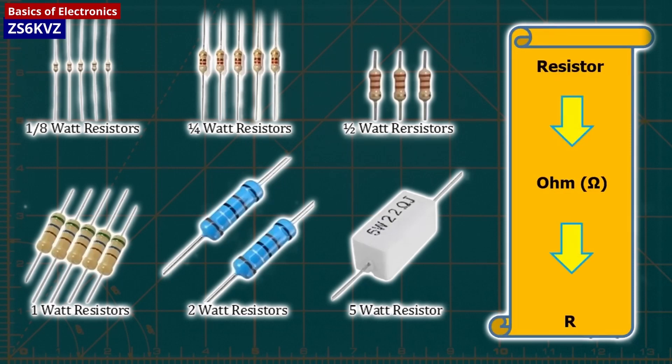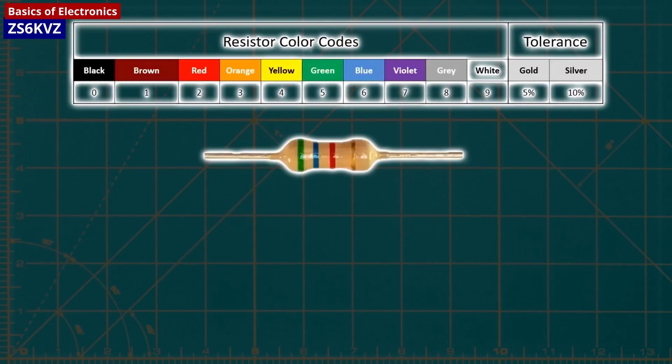Resistors also come with different wattage ratings. For most low-voltage DC circuits, one-quarter watt resistors should be suitable.